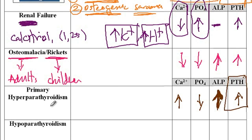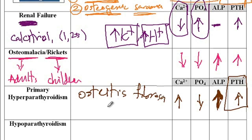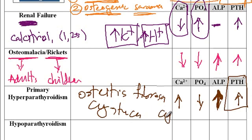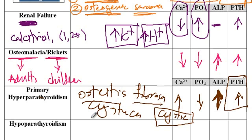The other term used for primary hyperparathyroidism is osteitis fibrosa cystica. This is due to the fact that parathyroid hormone causes more bone resorption, resulting in a consequent fibrous replacement of the marrow, which causes formation of cystic spaces inside the bone. So the other name for primary hyperparathyroidism is osteitis fibrosa cystica.